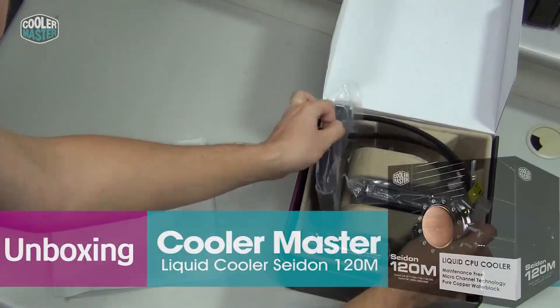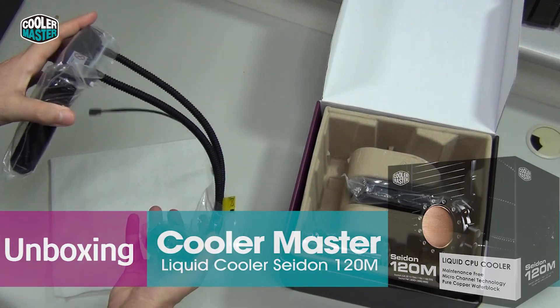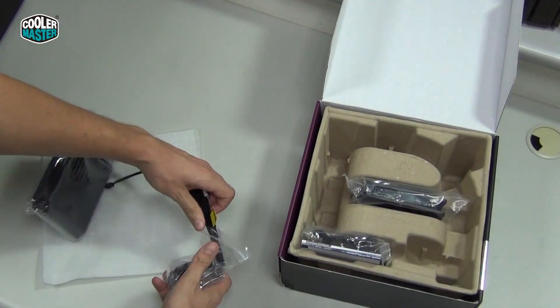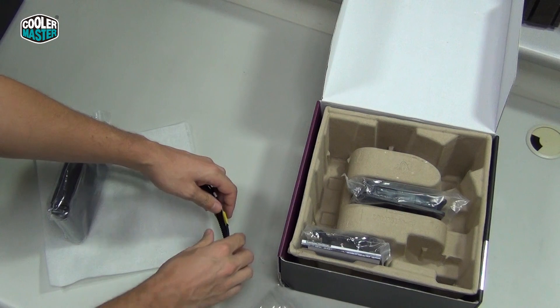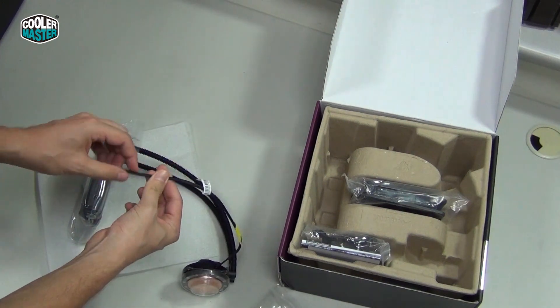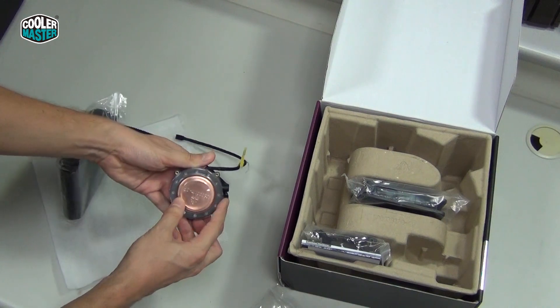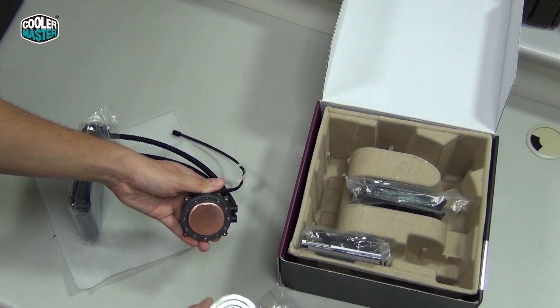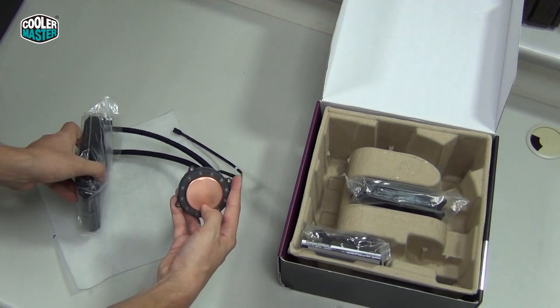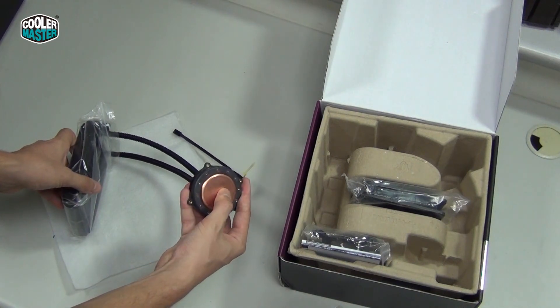Alright, you can see everything is packed into its own little neat plastic bag. Let me take it out. You can see the power cable for the pump is braided, which looks pretty cool. It has a protective cover on the bottom that we obviously have to remove. If you want to cool the CPU, you can see the copper cold plate, very flat.